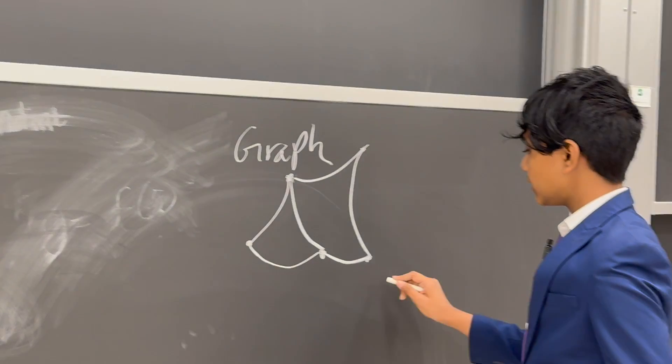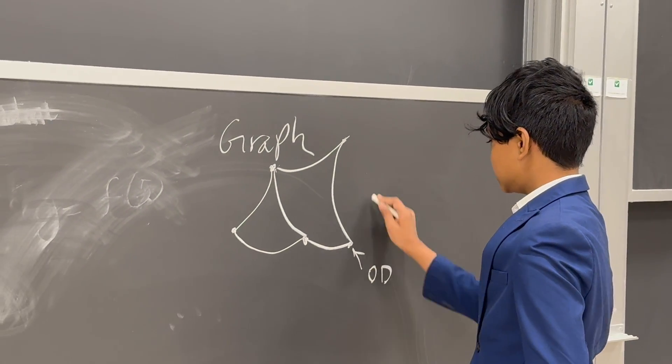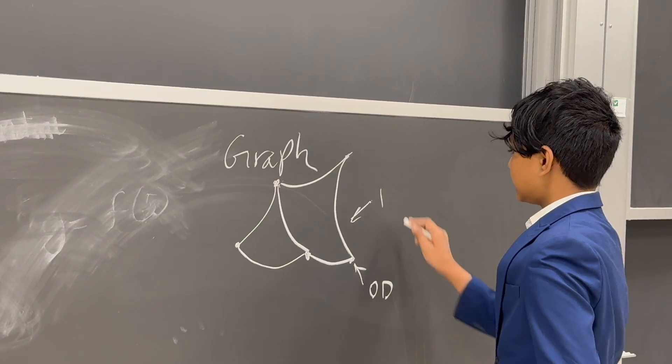So in this case, we can kind of call these nodes 0D, and these edges 1D.